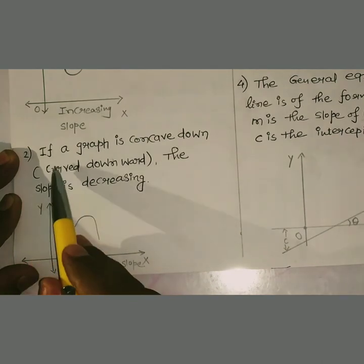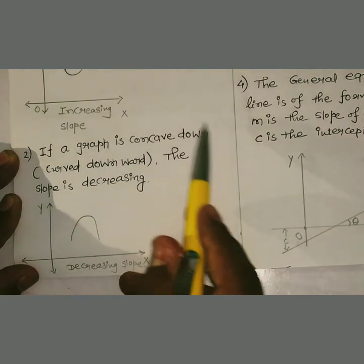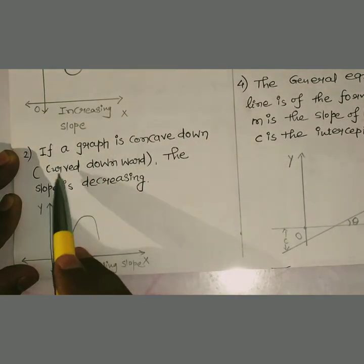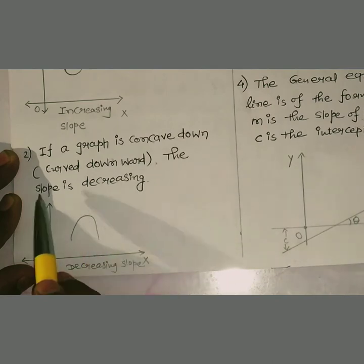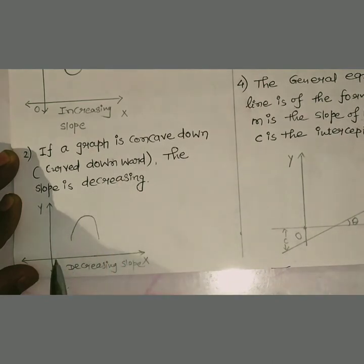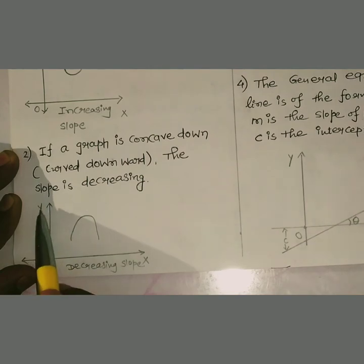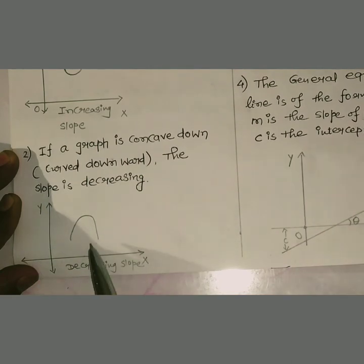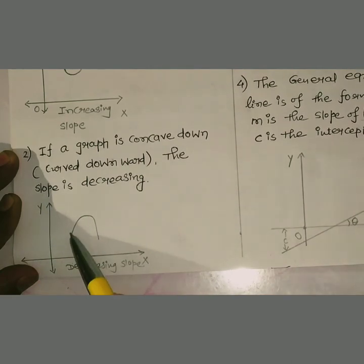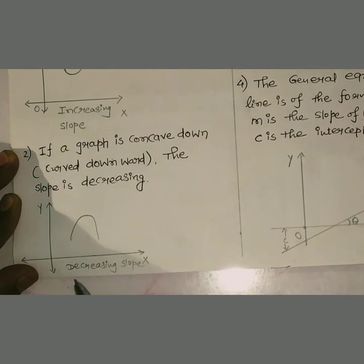Same way, if a graph is concave down या फिर downward, the slope is decreasing. See, this is your graph. This is your x-axis, this is your y-axis. Here the slope is downward, so it is a decreasing slope.